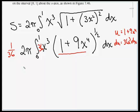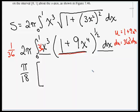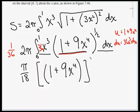2π times 1/36 gives us π/18. We're ready to integrate: we raise the power by 1, getting (1 + 9x⁴) to the 3/2 power, divided by 3/2, or multiplied by 2/3. We evaluate that from 0 to 1.